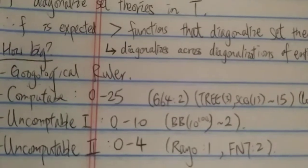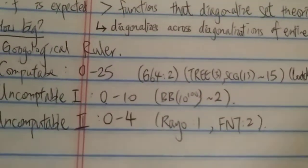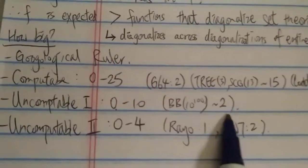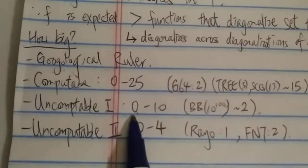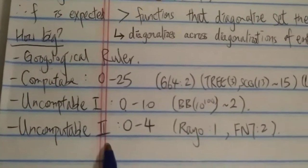And then for uncomputable one, it includes the bzbeaver function and is variance. And this number here is around level two of this category.